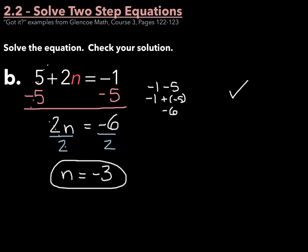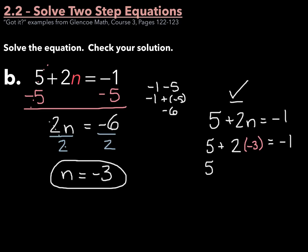For the check step, start by rewriting the original equation: 5 plus 2n equals negative 1. Then substitute in your answer, negative 3, in for n. So 5 plus 2 times negative 3 should equal negative 1. Simplifying, 2 times negative 3 is negative 6, and 5 plus negative 6 should equal negative 1. And sure enough, 5 plus negative 6 is negative 1, equals negative 1. Left side equals the right side, so n does indeed equal negative 3.